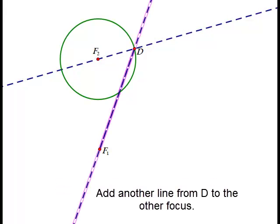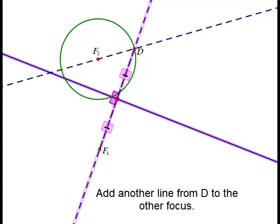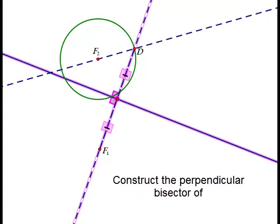Now we're going to draw a line that goes from point D through the other foci. I'm going to get rid of the line and just keep the segment D to F1. I'm going to find the midpoint of that segment and draw the perpendicular bisector of segment D to F1.